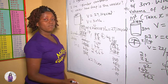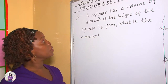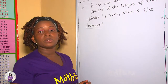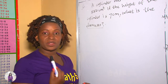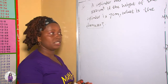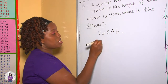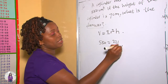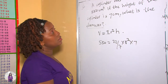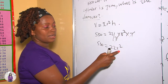Let's solve our next example. We are told that a cylinder has a volume of 550 centimeters cubed. If the height of the cylinder is 7 centimeters, what is the diameter? We know that the formula doesn't contain diameter directly, but once we get the radius we can find the diameter. We apply the formula: volume equals π r² h. Our volume is 550, π is 22 over 7, r² is unknown, and h is 7. Since 7 cancels with the denominator, 550 equals 22 r².